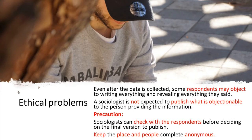Even after the data is collected, some respondents may object to revealing everything they said. A sociologist is not expected to publish what is objectionable to the person providing the information. Researchers do take precautions to avoid such problems. For instance, the sociologist should check with the respondents before deciding on the final version to be published, and should ensure that she has kept the place and people completely anonymous.